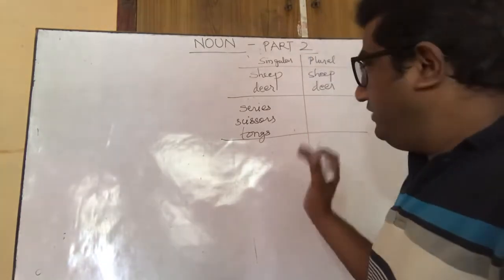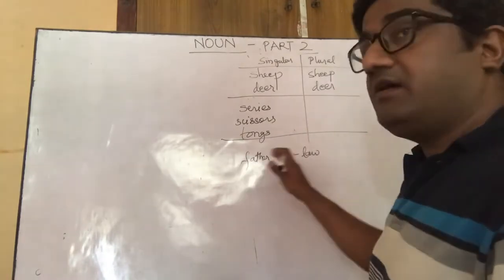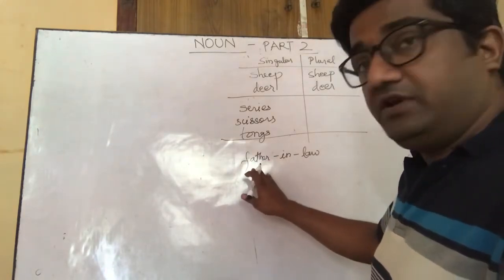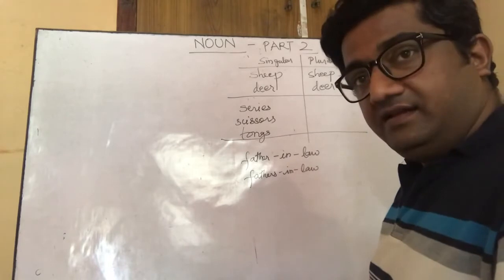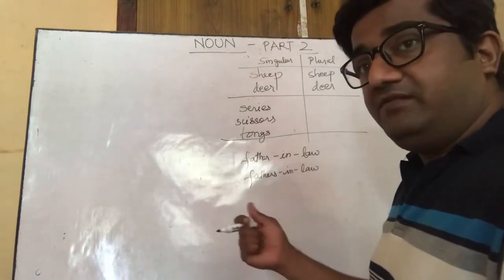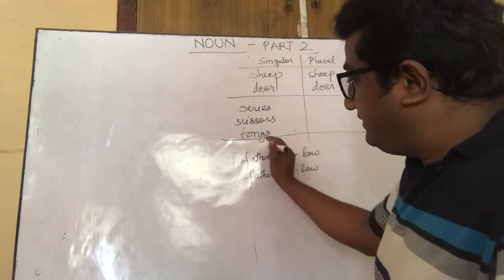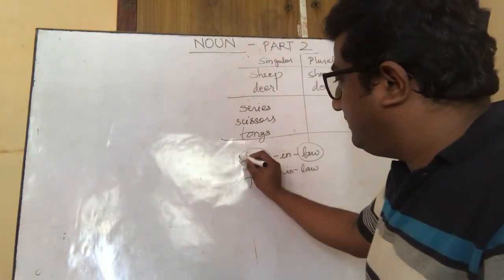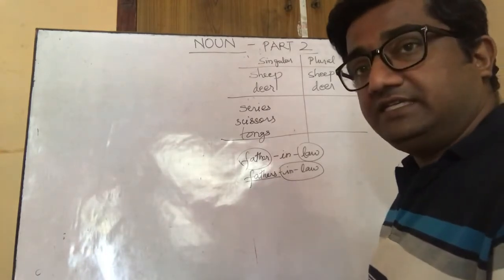There are also compound nouns. For example, father-in-law. When converting a compound noun to plural, the plural of father-in-law is fathers-in-law. Similarly, attorney-general becomes attorneys-general. For compound nouns, we change the main noun into its plural form and keep the supporting noun as it is — that is how the compound noun changes into its plural form.